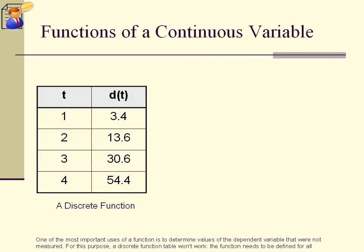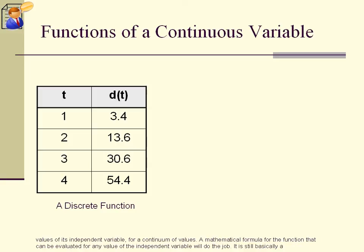One of the most important uses of a function is to determine values of the dependent variable that were not measured. For this purpose, a discrete function table won't work. The function needs to be defined for all values of its independent variable, for a continuum of values. A mathematical formula for the function that can be evaluated for any value of the independent variable will do the job. It is still basically a correspondence of values.